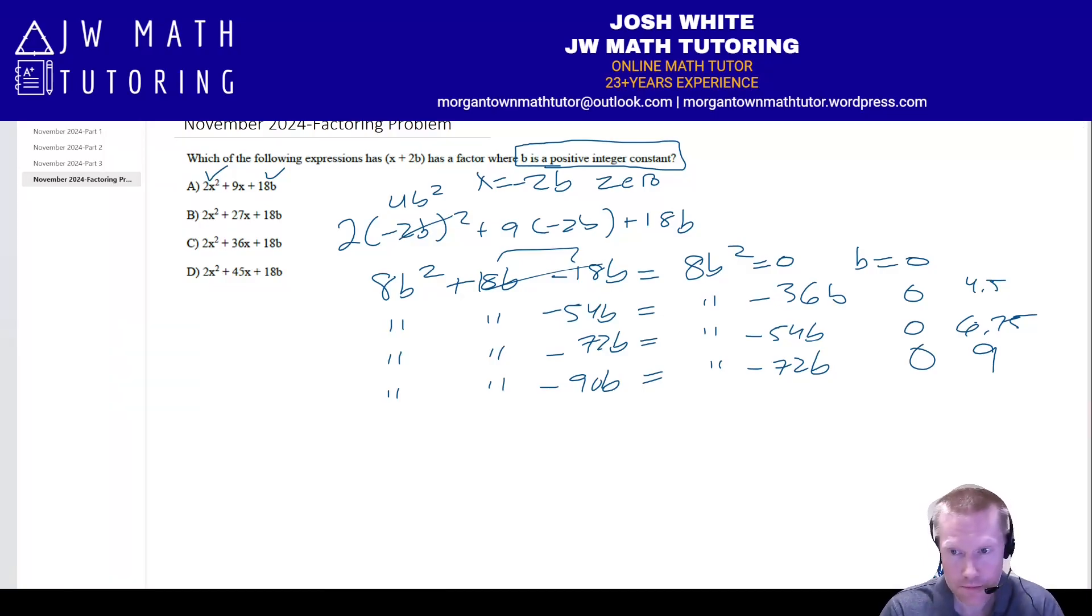So therefore, answer choice D is the only one that when you plug in negative 2B, basically gives you a solution of a B value when it's set equal to zero, which is an integer. Therefore, D is going to be the correct answer.